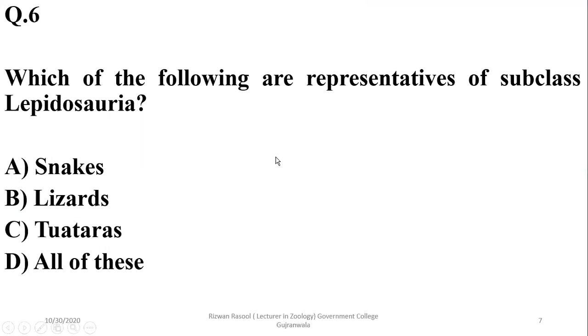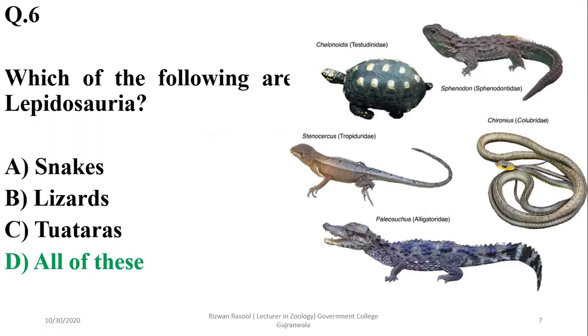Question six: which of the following are representatives of subclass Lepidosauria? Lepidosauria includes snakes, lizards, as well as tuatara. The correct option is delta.